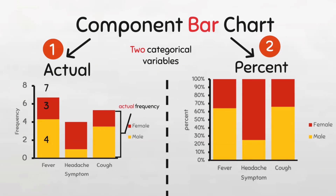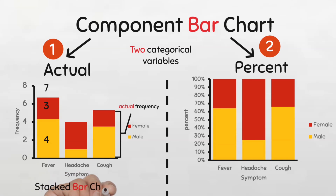This type of component bar chart is also called a stacked bar chart because you can see that one component is stacked on the other.